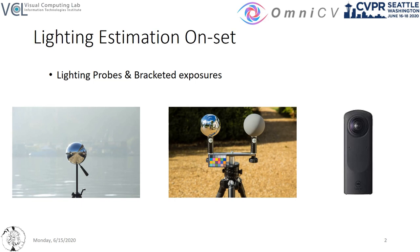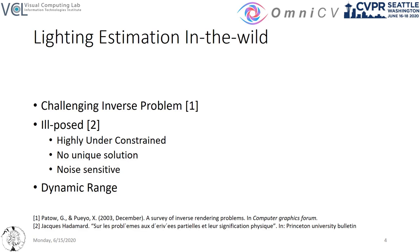But lighting estimation is a challenging inverse rendering problem that is highly under-constrained, and none of the Hadamard well-posedness criteria apply. It also needs to be estimated in high dynamic range, typically from low dynamic range images.